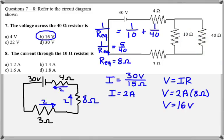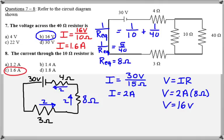For question 8, I take the 16 volts across the 10-ohm resistor and divide by 10 ohms, giving a current of 1.6 amperes, which corresponds to answer C. Remember, when resistors are in parallel they share the same voltage, so I found that voltage using the equivalent resistance and the total current, then applied Ohm's law individually to find the current through each resistor. The 40-ohm resistor would have a current closer to 0.4 amperes.